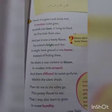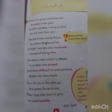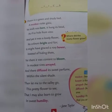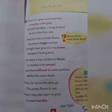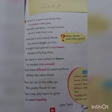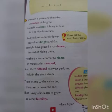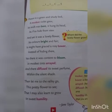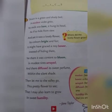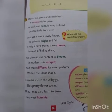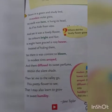Let us read the poem: 'Down in a green and shady bed, a modest violet grew. The stalk was bent, it hung its head, as if to hide from view. And yet it was a lovely flower, its colors bright and fair. It might have graced a rosy bower, instead of hiding there. Yet there it was content to bloom in modest tints and there diffused its sweet perfume within the silent shade.'